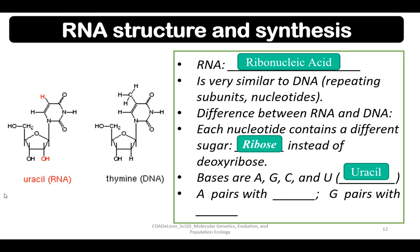Now let's check the base pairings in RNA. Adenine pairs with uracil, and guanine pairs with cytosine. This is the difference between uracil found in RNA and thymine found in DNA. In thymine you have a C connected with three hydrogens, while in uracil it is just H.